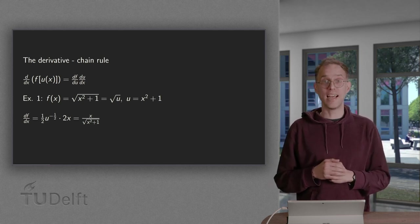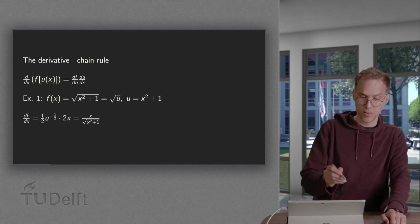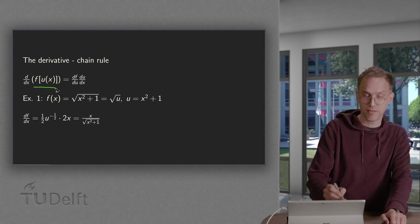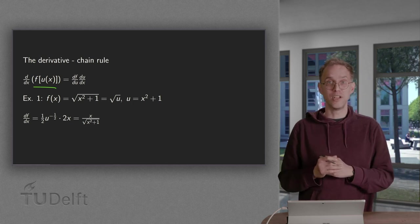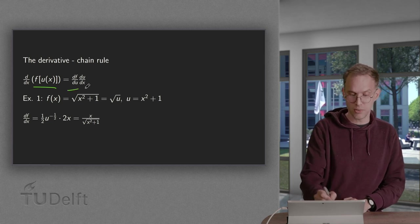Furthermore, we will see some notation and examples of the chain rule. So what is the chain rule? If you have some f which depends via u on x, then the d/dx of f(u(x)) equals df/du times du/dx.